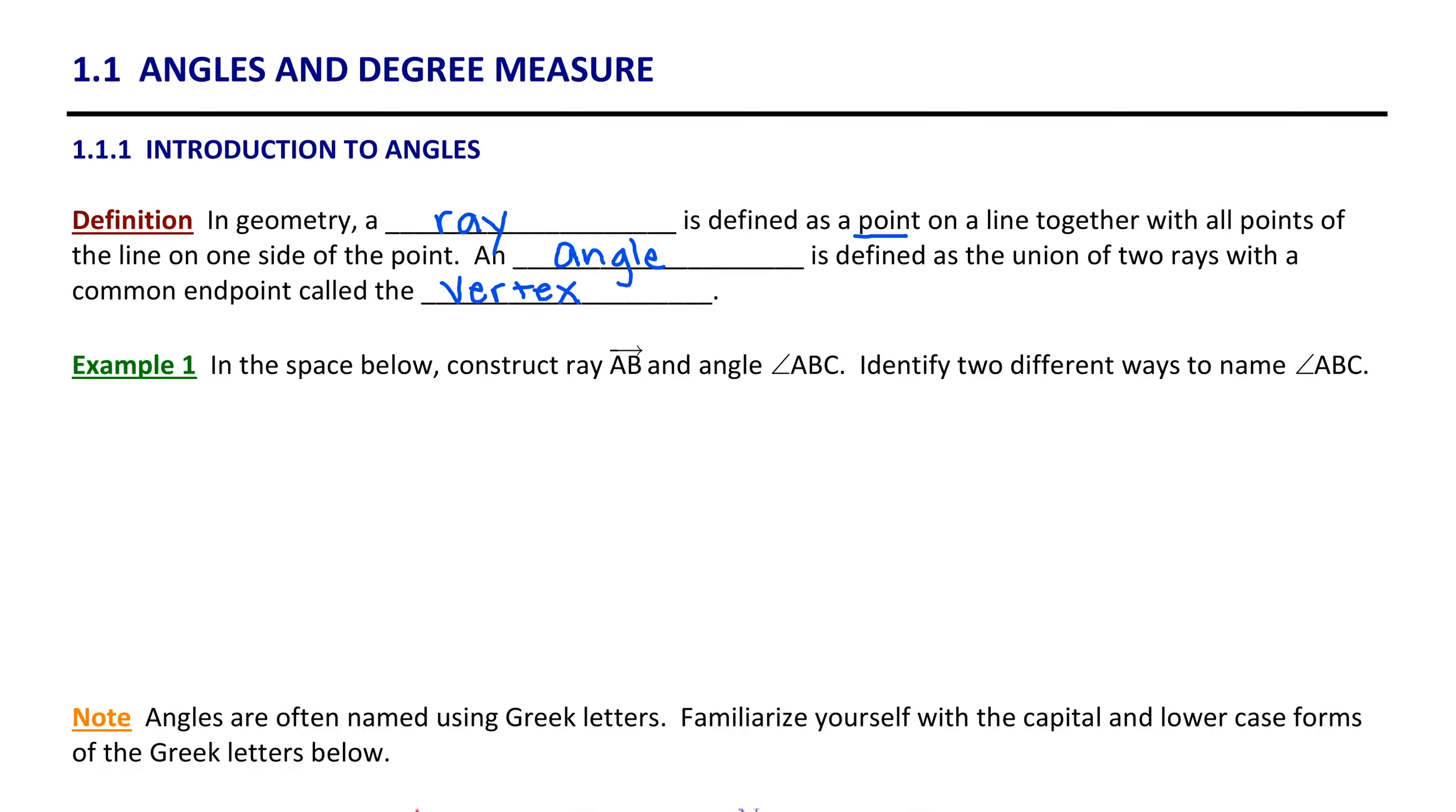Example 1. In the space below, construct ray AB and angle ABC. Then identify two different ways to name angle ABC.